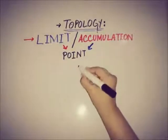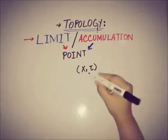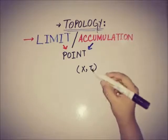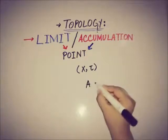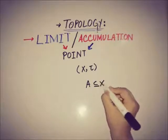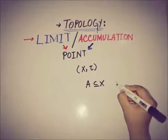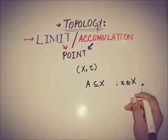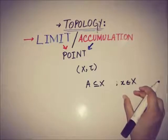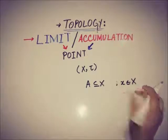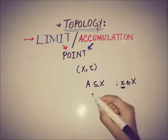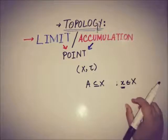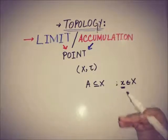If we have a topological space (X, τ), where X is a set and τ is a topology on X, and A is any subset of X, and we pick any random point from X, then that point is known to be a limit or accumulation point of A if every possible neighborhood of that point intersects with A other than the point itself.